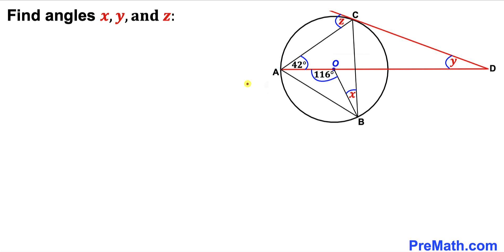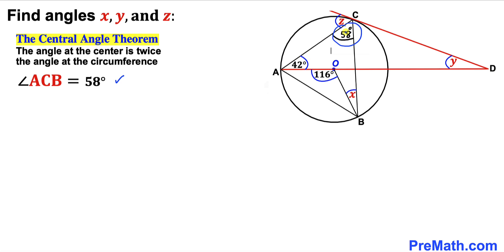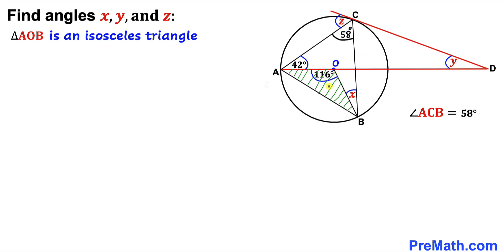Let's get started. Our first step is to recall the Central Angle Theorem: the angle at the center is twice the angle at the circumference. In our case, the angle at the center is 116 degrees, so the angle at the circumference is half of that — 58 degrees. Therefore, angle ACB turns out to be 58 degrees.